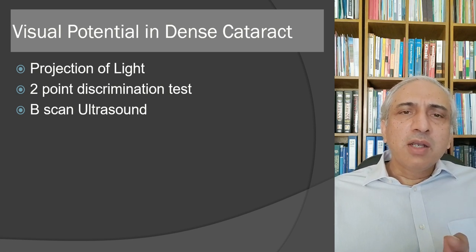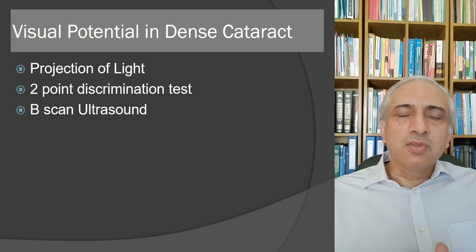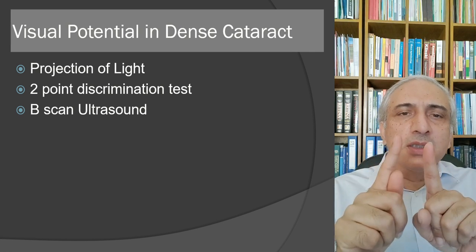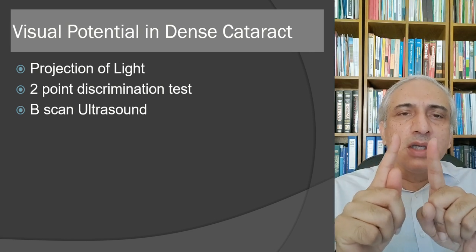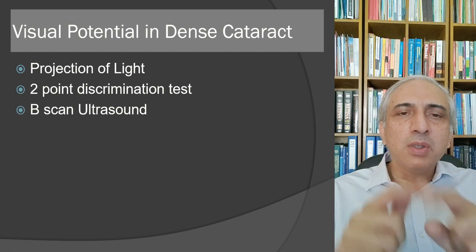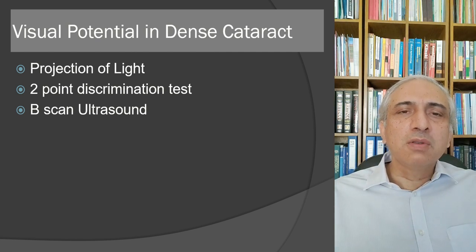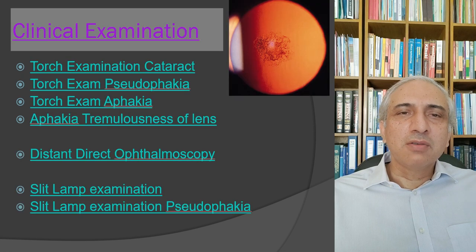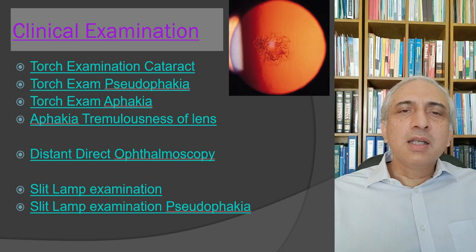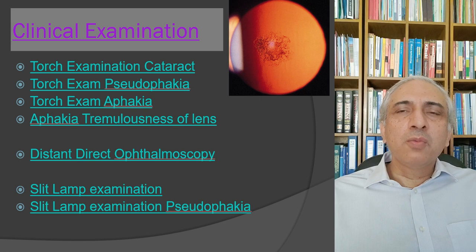For visual potential in a dense cataract, projection of light is the most important test. You can also check two-point discrimination to assess macular function, and perform B-scan ultrasound.